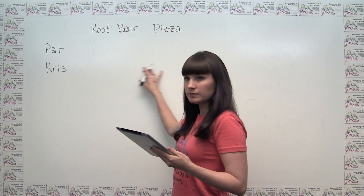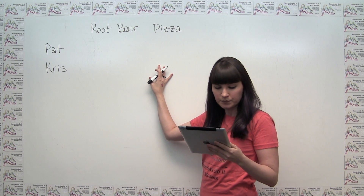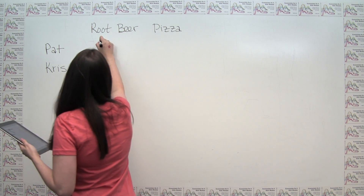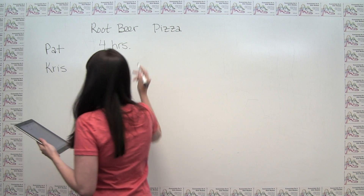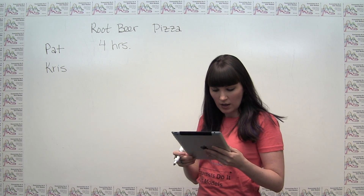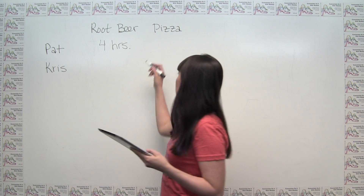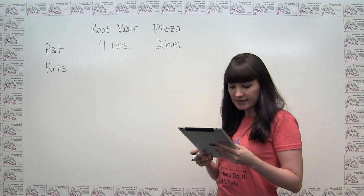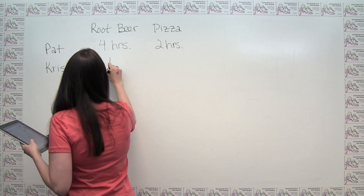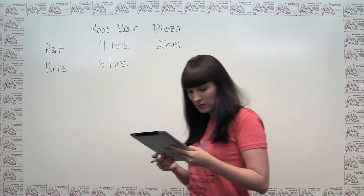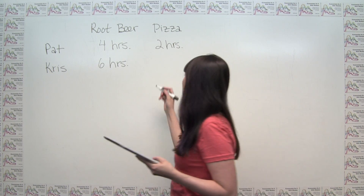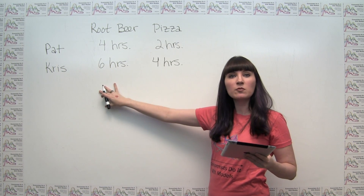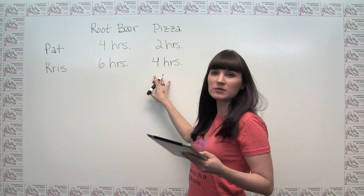We can take that information and put it in a table. Pat takes four hours to brew a gallon of root beer and two hours to make a pizza. Chris takes six hours to brew a gallon of root beer and four hours to make a pizza. So now we have basic information on the time required to make each item for each person.